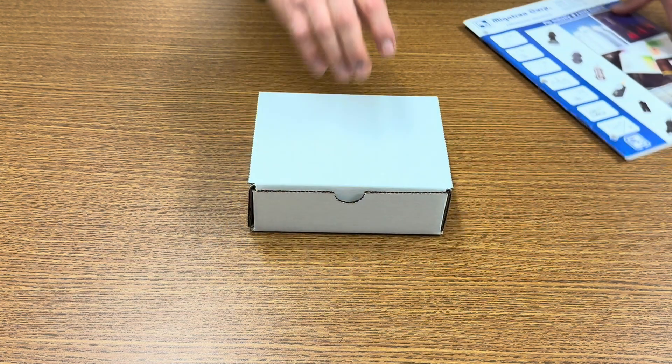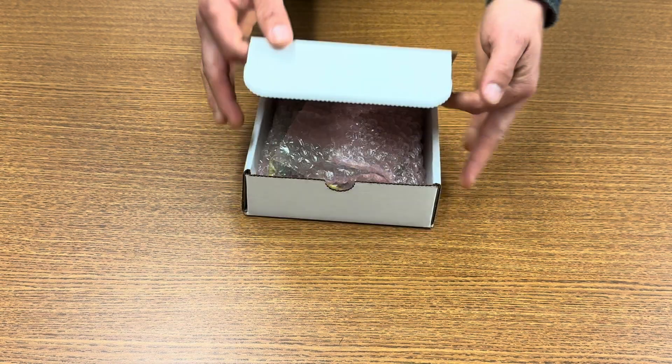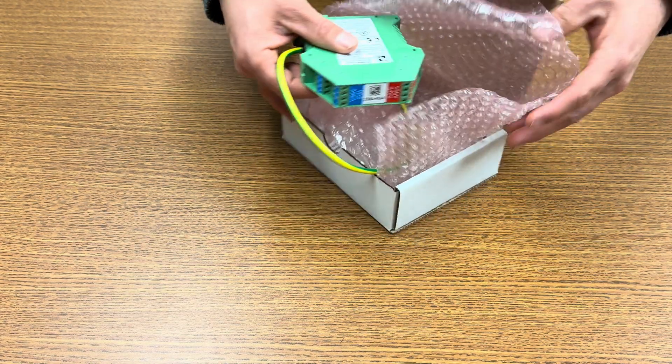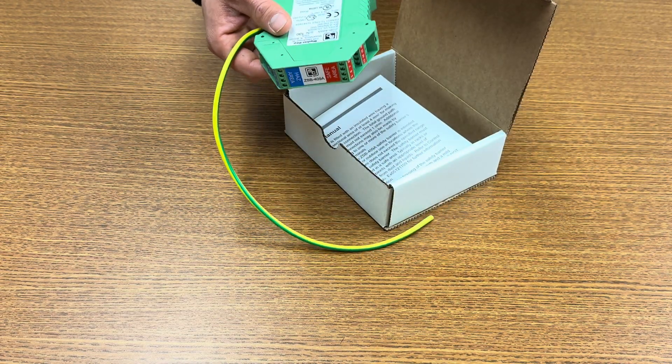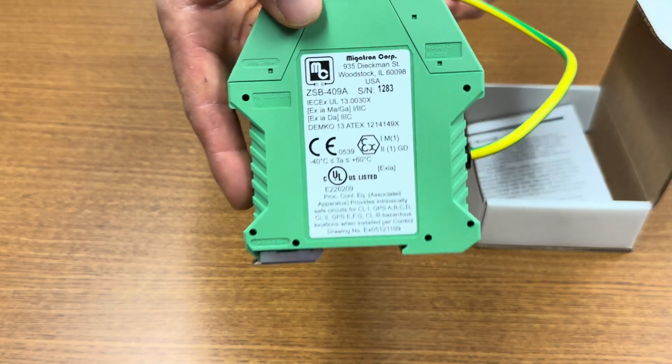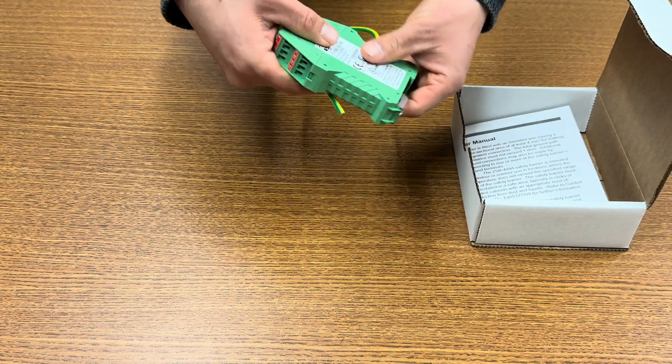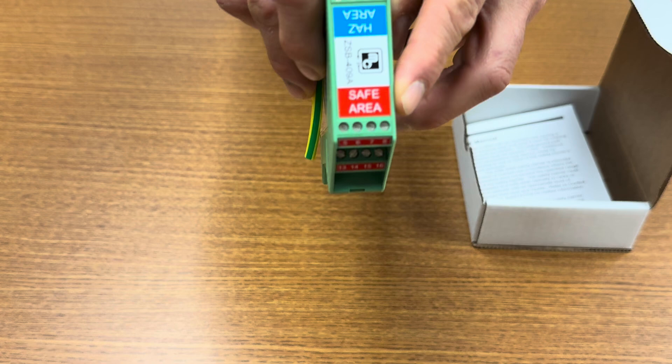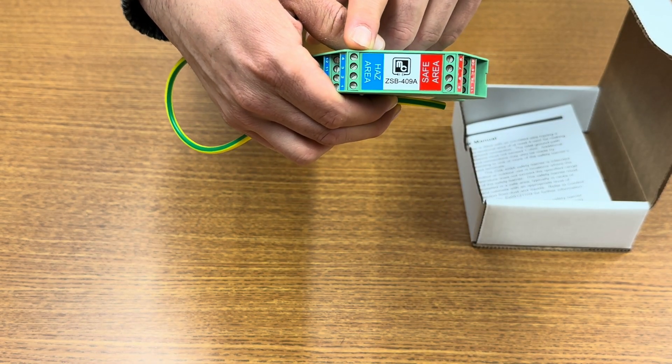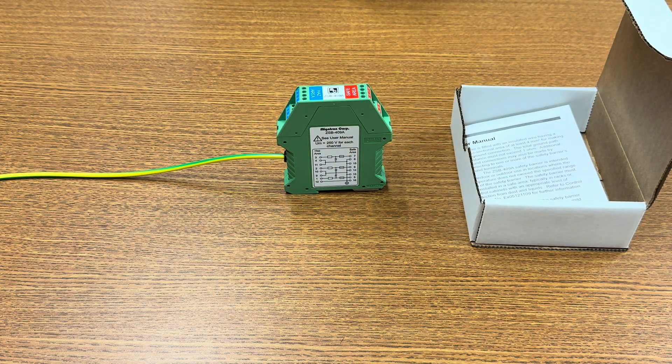All right, let's open this up and see what we got inside. Inside the box, we've got the ZSB-409A safety barrier itself, which has an IA rating. It's quite stunning. Here is the safe area where electricity goes in, and here is the hazardous area. The barrier limits the amount of electrical energy that can reach a hazardous area.